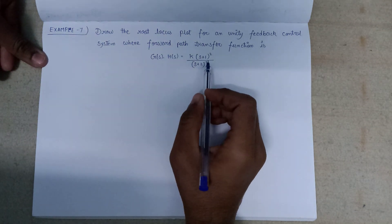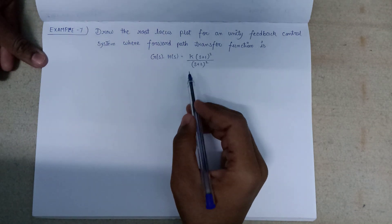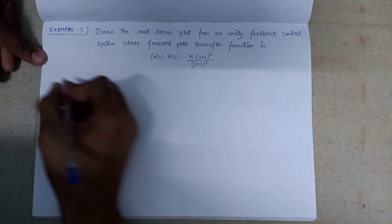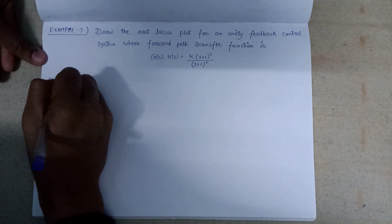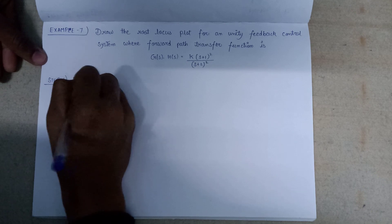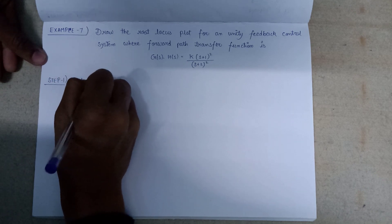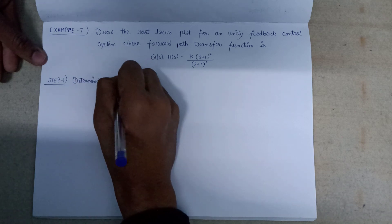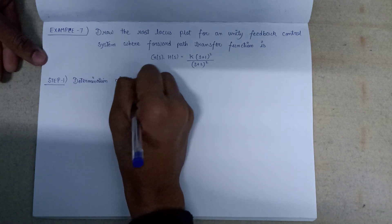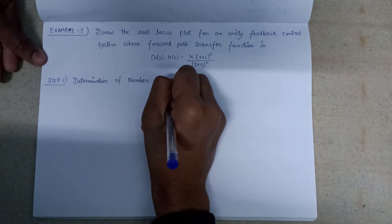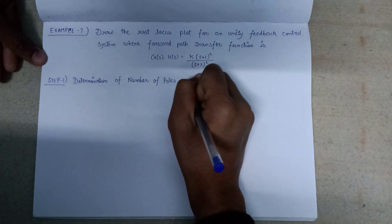We need to plot the root locus on the s-plane. We have to follow all 9 steps to plot the root locus. Step number 1 is the determination of the number of poles and number of zeros.